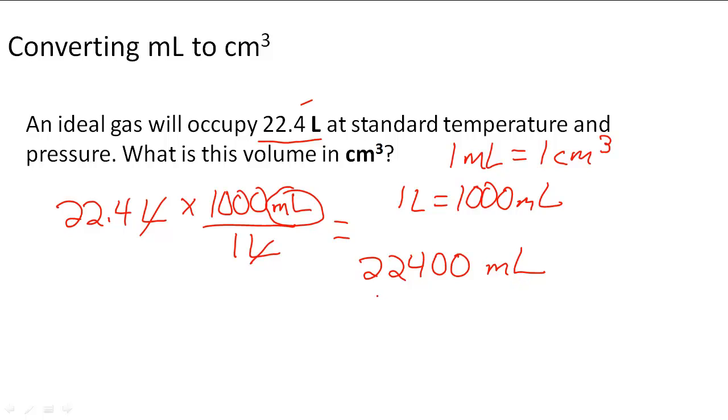Now to go from milliliters to centimeters we can use again our conversion factor. One centimeter cubed actually is one milliliter. And so when we multiply across and then divide, we're going to cancel out the units. When we multiply just by one, we're going to end up with 22,400 centimeters cubed as the answer to this problem.